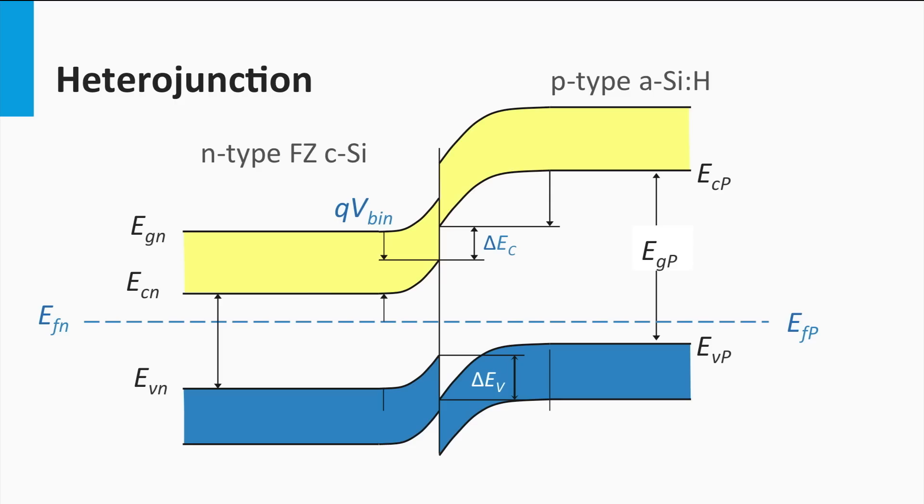However, you can also make a junction by two different semiconductor materials. For instance, one semiconductor material that is P-doped and another type of semiconductor material that is N-doped. This is what we call a heterojunction. In the crystalline silicon wafer-based heterojunction, we make use of two types of silicon-based semiconductor materials. One is again an N-type float zone monocrystalline silicon wafer. The other material is hydrogenated amorphous silicon.